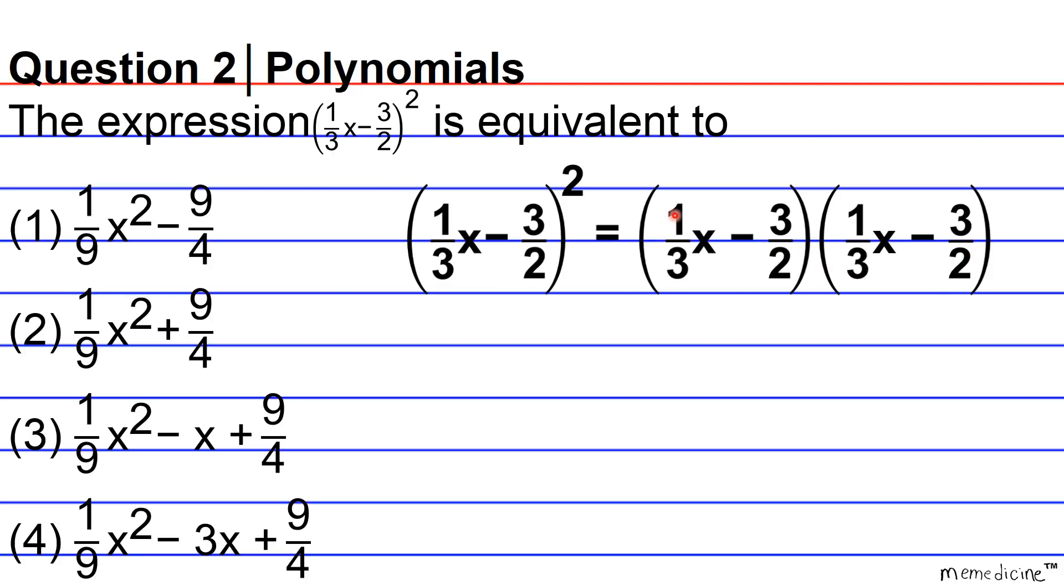So the first thing we're going to do is multiply the first two terms. This represents the F in FOIL which stands for first, and we're obviously going to get 1/9x².